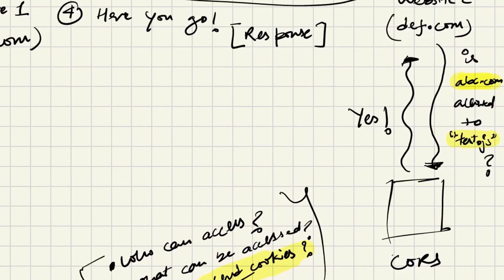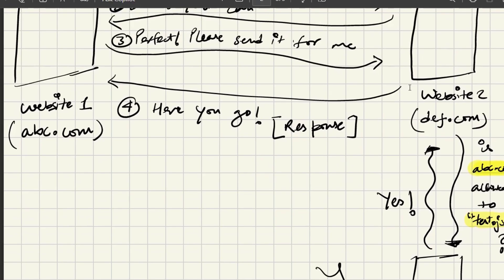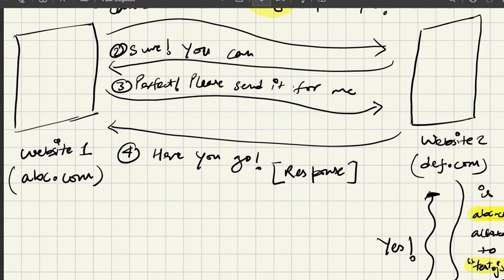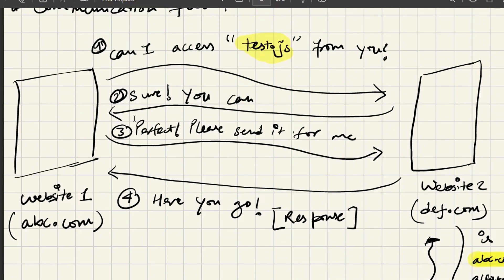Based on the CORS policy, let's say website one (abc.com) is allowed to access website two (def.com). The CORS policy will return yes, and website two will send a response back allowing access to test.js. On the third step, website one sends the actual request to retrieve the file, and since it is allowed, the file gets sent back in the response.